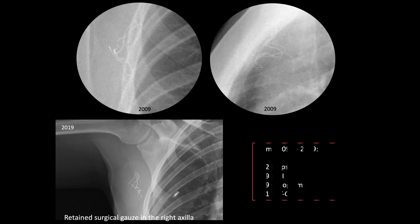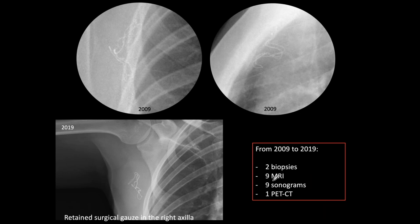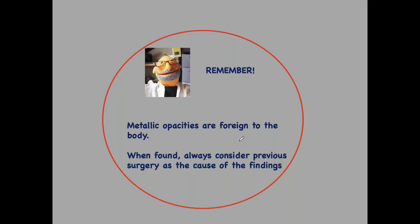Chest radiology — it makes me very proud to say that we made the diagnosis after ten years of two biopsies, nine MRIs, nine sonograms, and one PET CT. This is to again stress the importance of the plain film, especially when looking at metallic markers, metallic staples, or whatever indicates a foreign object in the chest. Remember: metallic opacities are foreign to the body, and when found, always consider previous surgery as the cause of the finding.